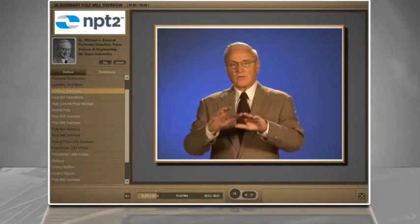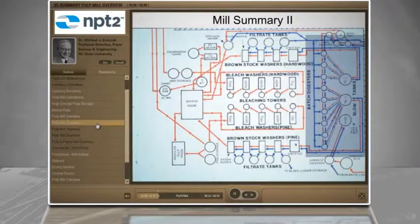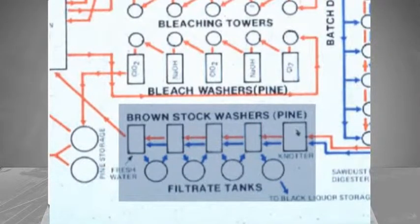The scale and size of the equipment and processes is huge. Let's look at an overall summary of these operations. The pulp then goes through, on the bottom center, stages of ground stock washing.